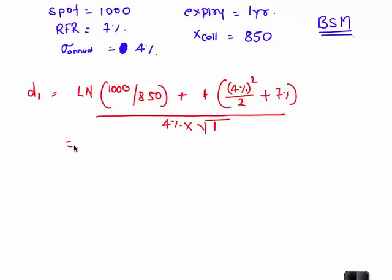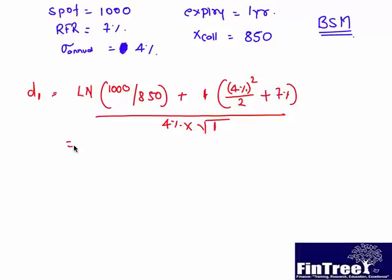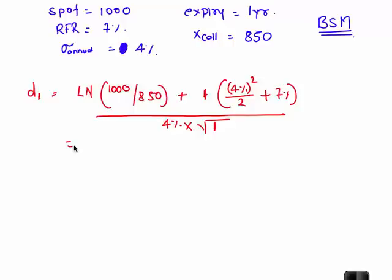1000 divided by 850, ln. So that should be 0.162. How do you read this number? The distance between spot and strike is about 16.25%. So let that number remain as it is. Put that in the first memory slot STO1.